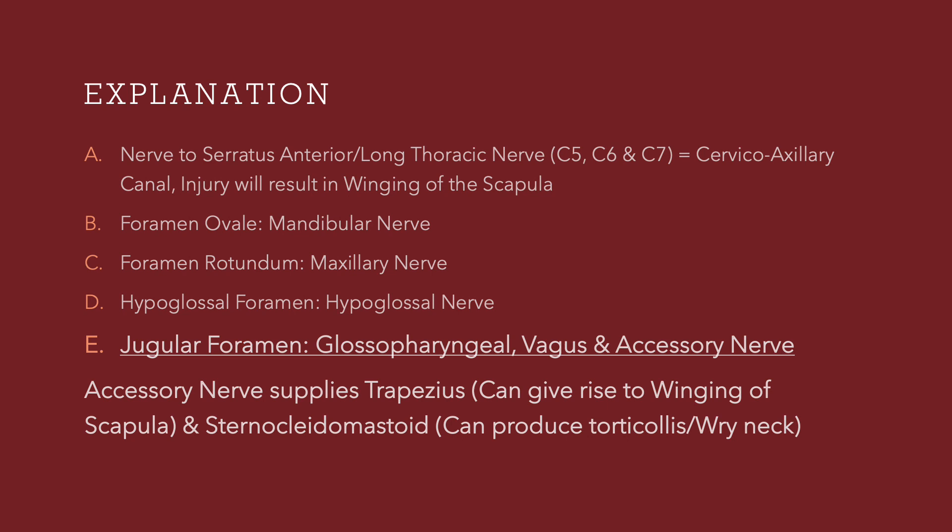So the answer is the jugular foramen, through which three structures pass: the 9th, 10th, and 11th nerve. The spinal accessory nerve can be injured during a radical neck dissection surgery, giving rise to paralysis of two muscles: trapezius and sternocleidomastoid. Paralysis of trapezius can give rise to winging of scapula, and sternocleidomastoid injury can give rise to torticollis. All those who got the answer right — kudos to you.